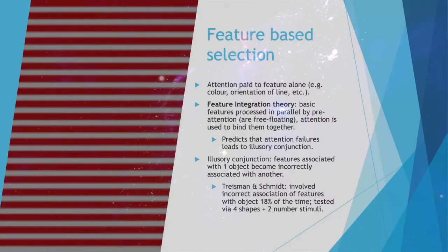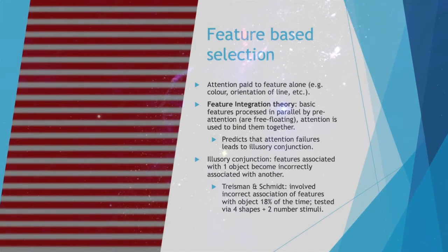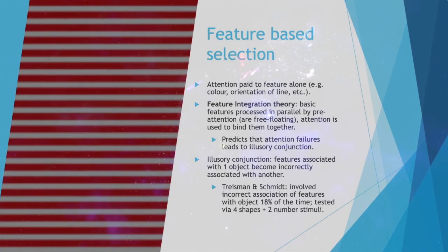Feature-Based Selection is when attention is paid to a specific feature alone — for example, color, orientation of a line, etc.